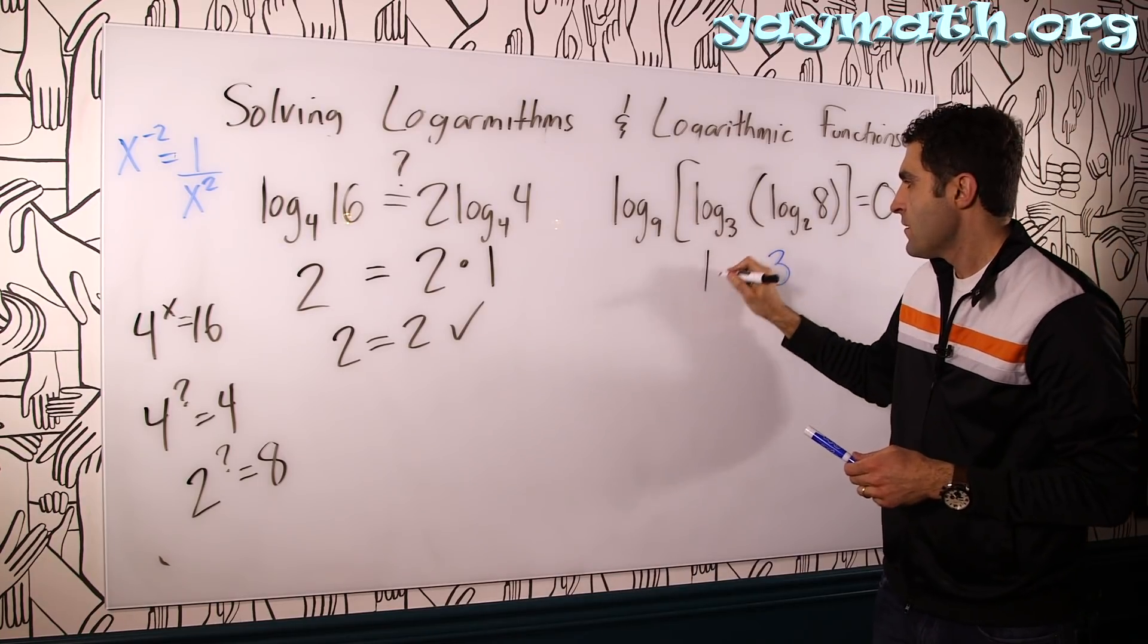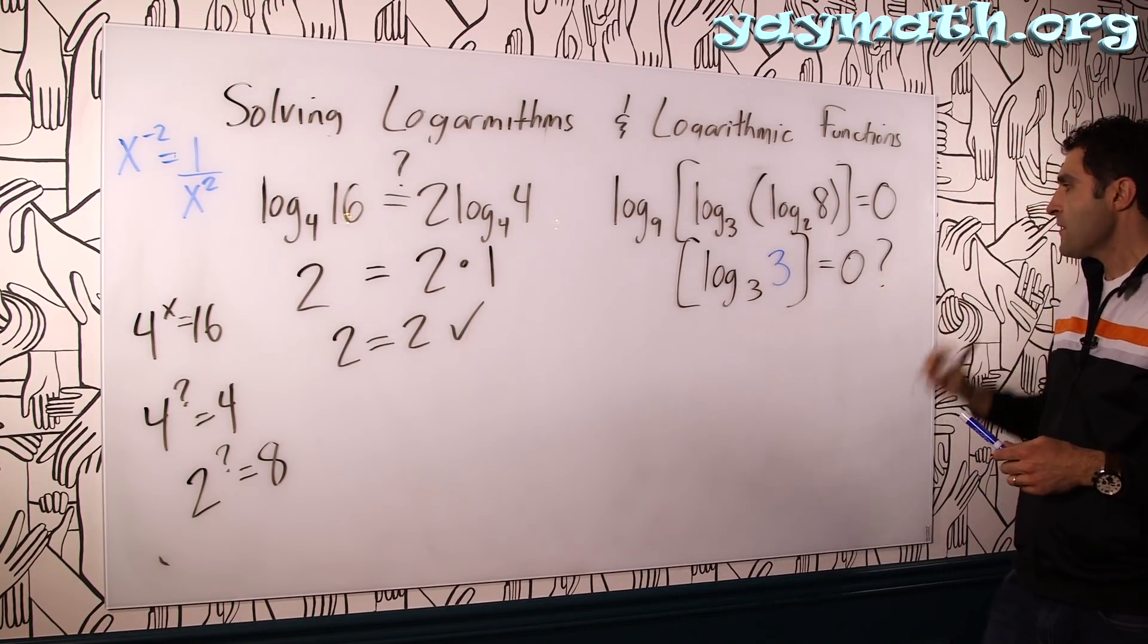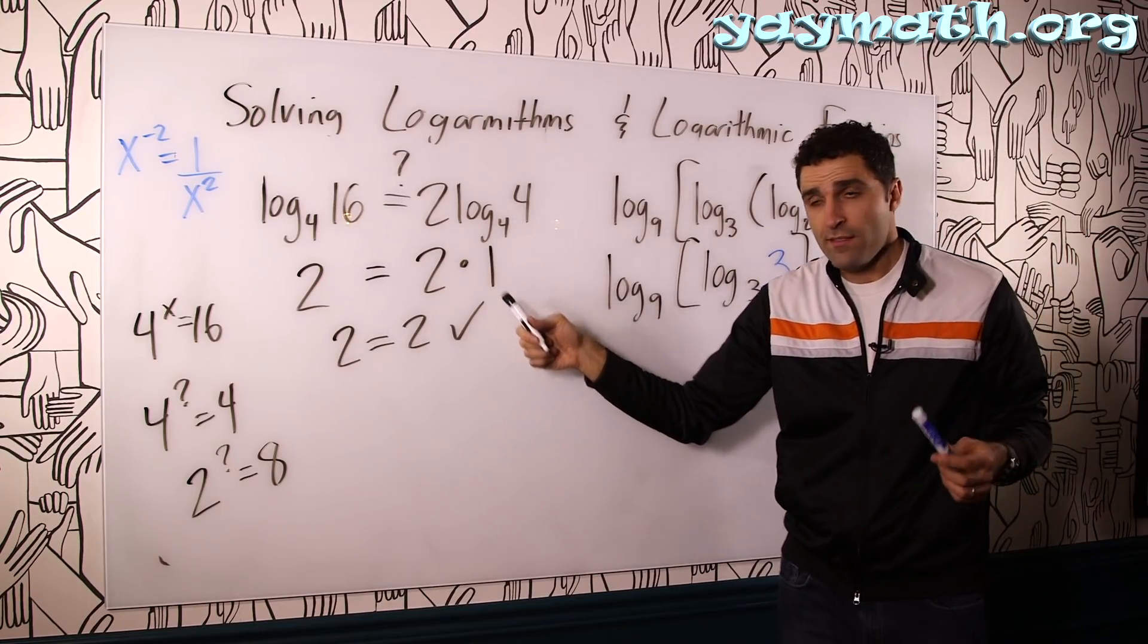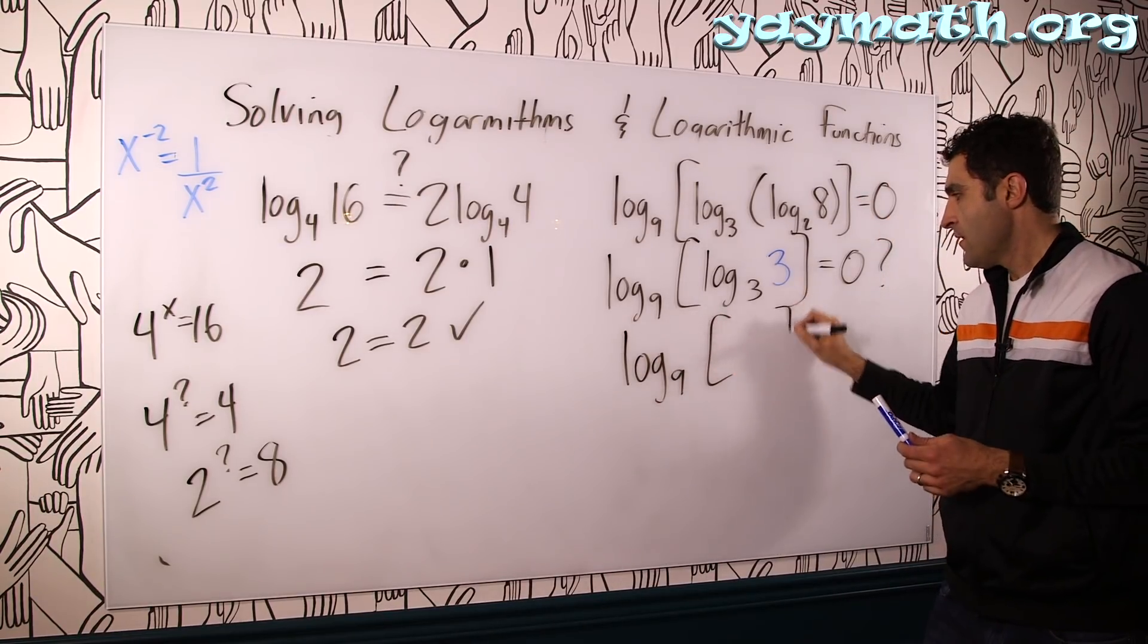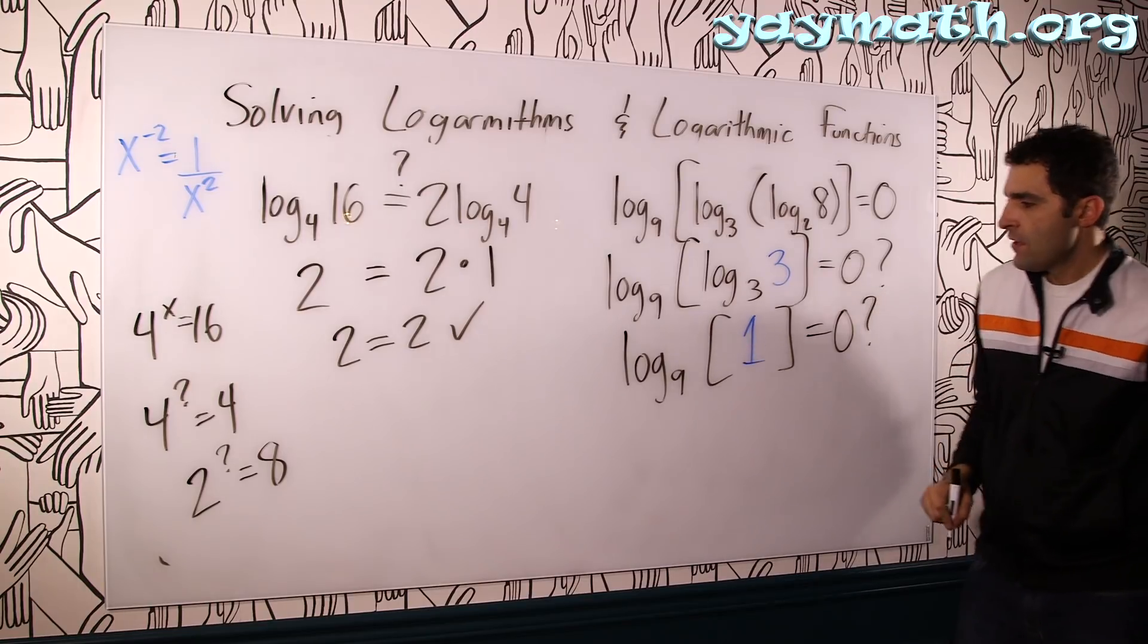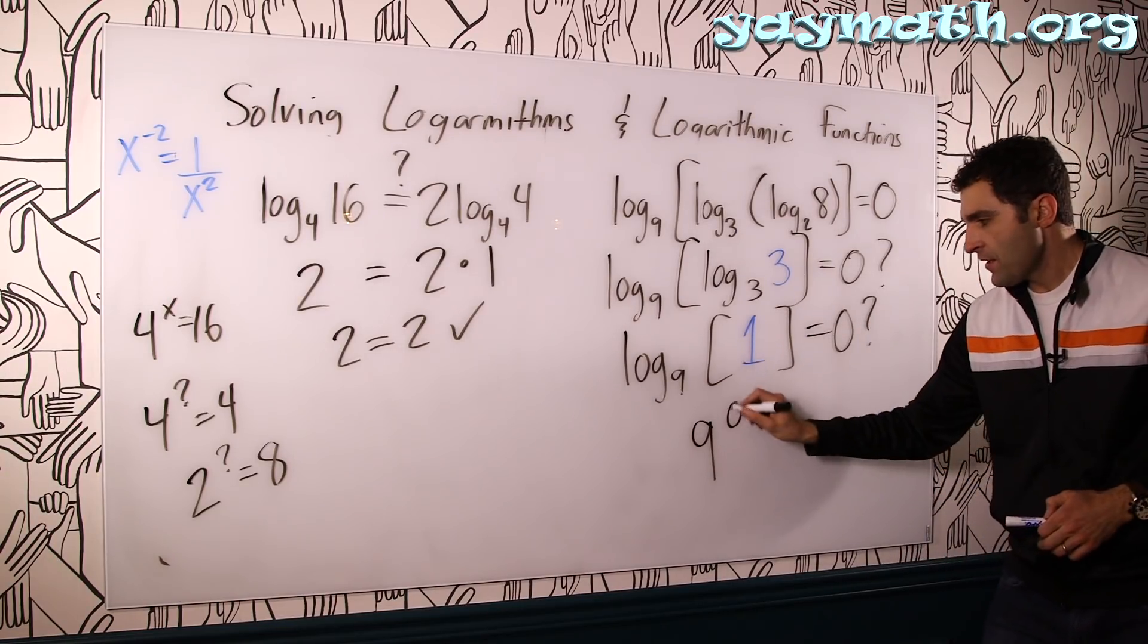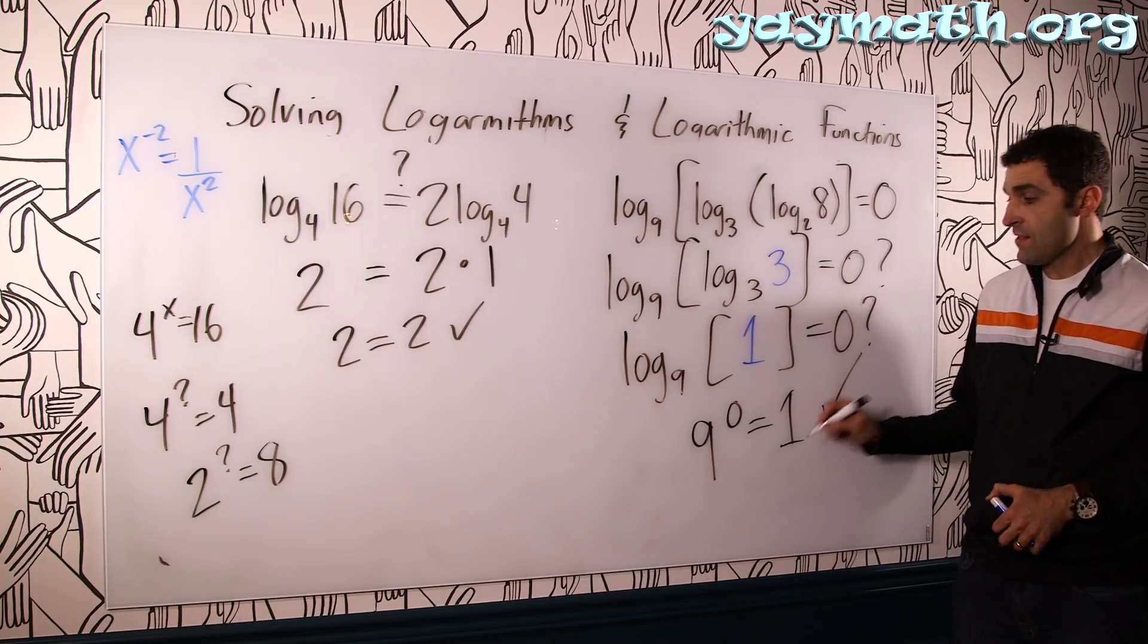Let's bring down our friends. Log base 3. So that's here. That's here. Equals 0? Question mark. And then we have log base 9 chilling. Log base 3 of 3. Oh! Same thing. Log base 4 of 4 was 1. Log base 3 of 3 is 1. That's log base 9. Bringing it down. Inside here we have the number 1. Equals 0. Is it true? Let's turn it into an exponent. Base, exponent, number. Base to the exponent equals 1. Is it true? Yes. Anything to the 0 is 1. Including banana to the 0 is 1. So this is a true statement.